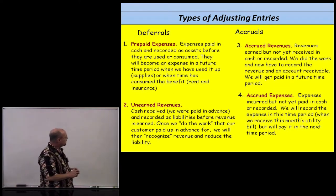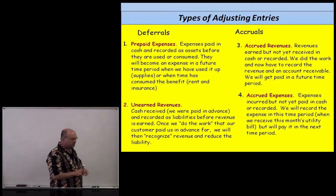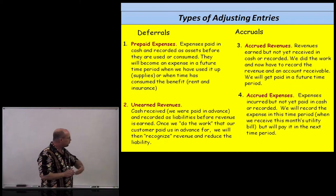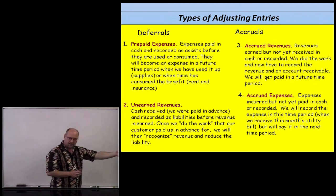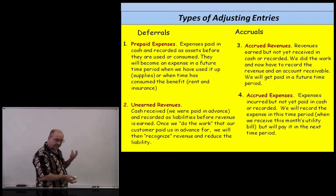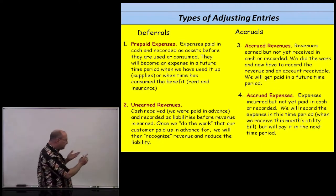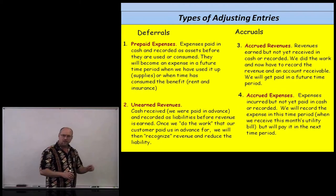A prepaid expense: expenses paid in cash and recorded as an asset before they are used up or consumed. They will become an expense in a future time period — such as supplies, or when time has consumed the benefit, like prepaid rent or insurance. Unearned revenue: cash is received — we were paid in advance — and we initially record a debit to cash and credit a liability called unearned revenue, because we haven't done the work yet. Once we do the work our customer paid us in advance for, we recognize revenue, reduce the liability, and that's the adjusting entry.